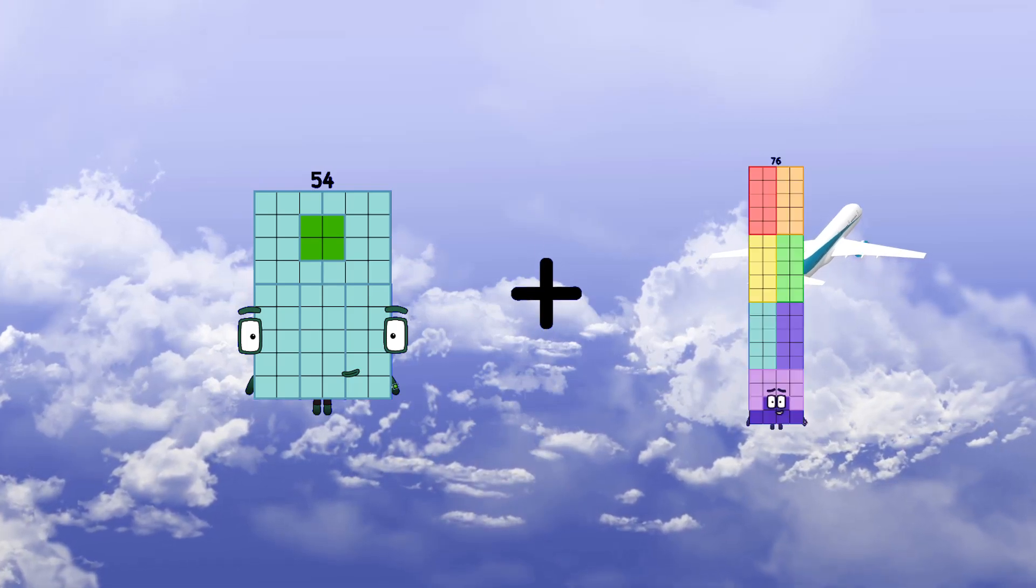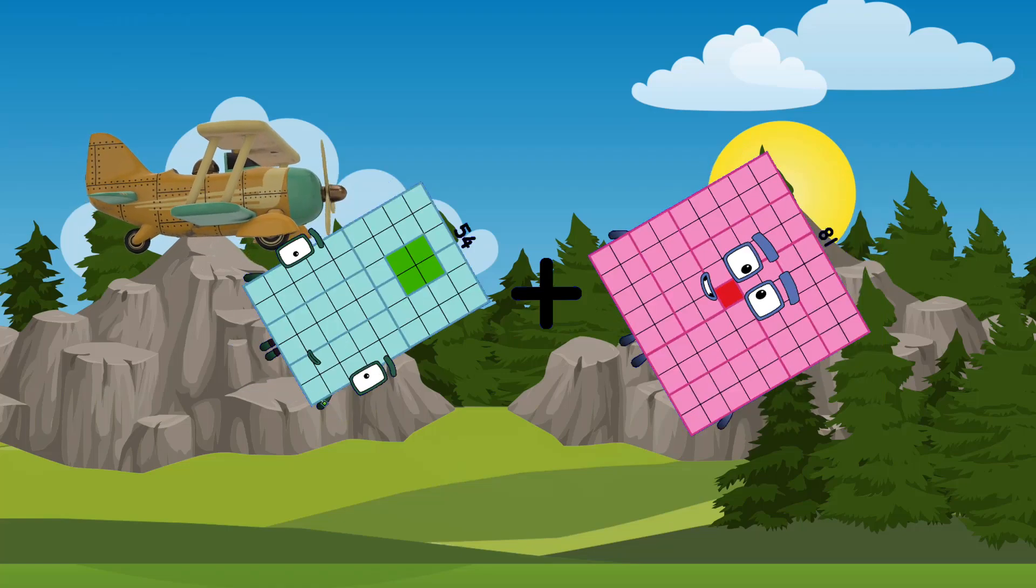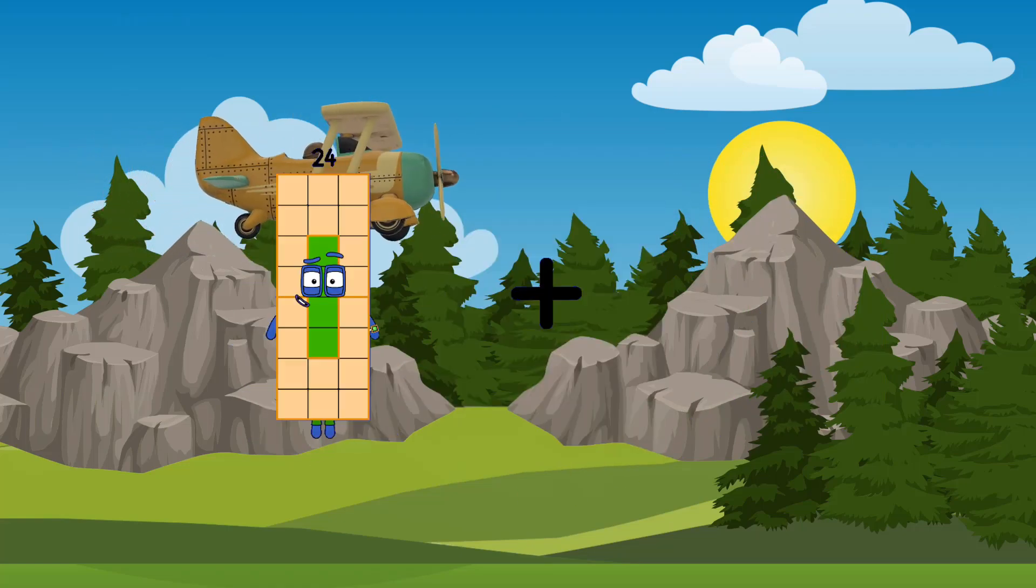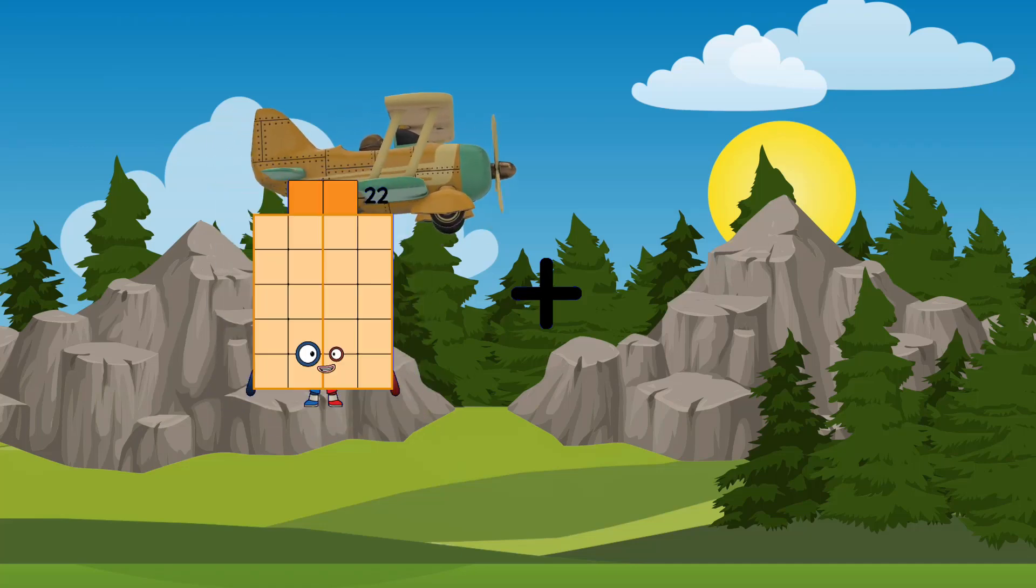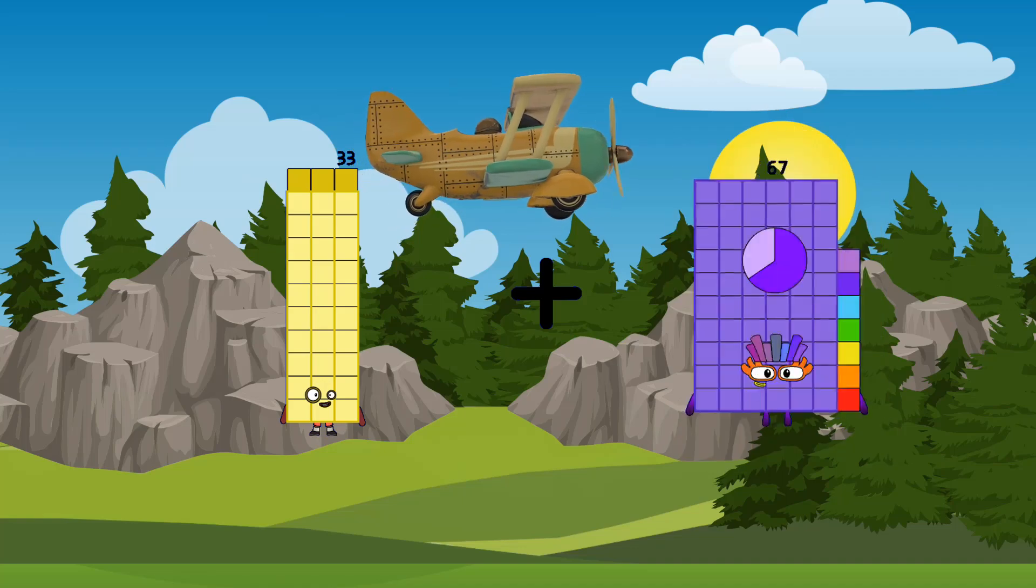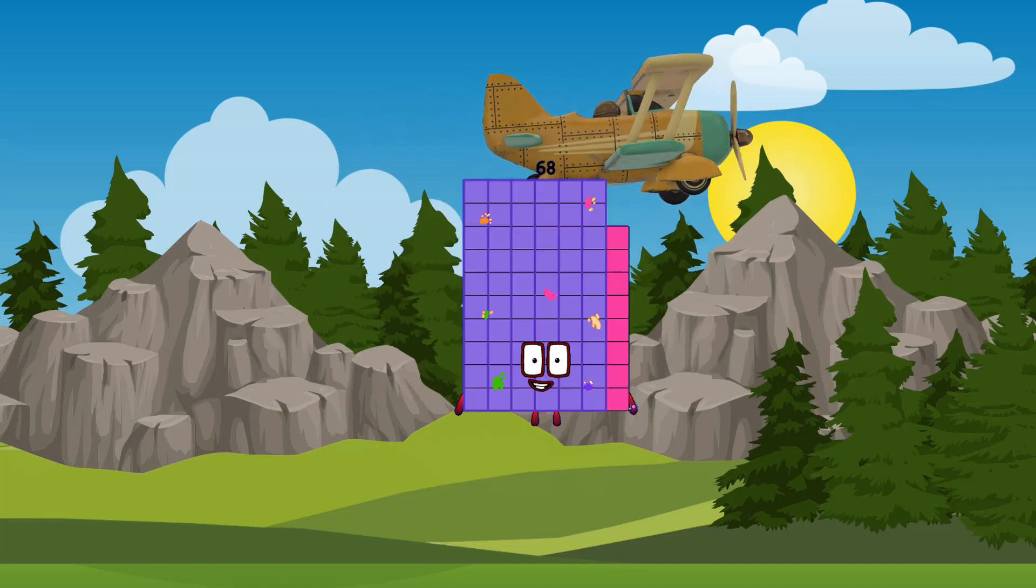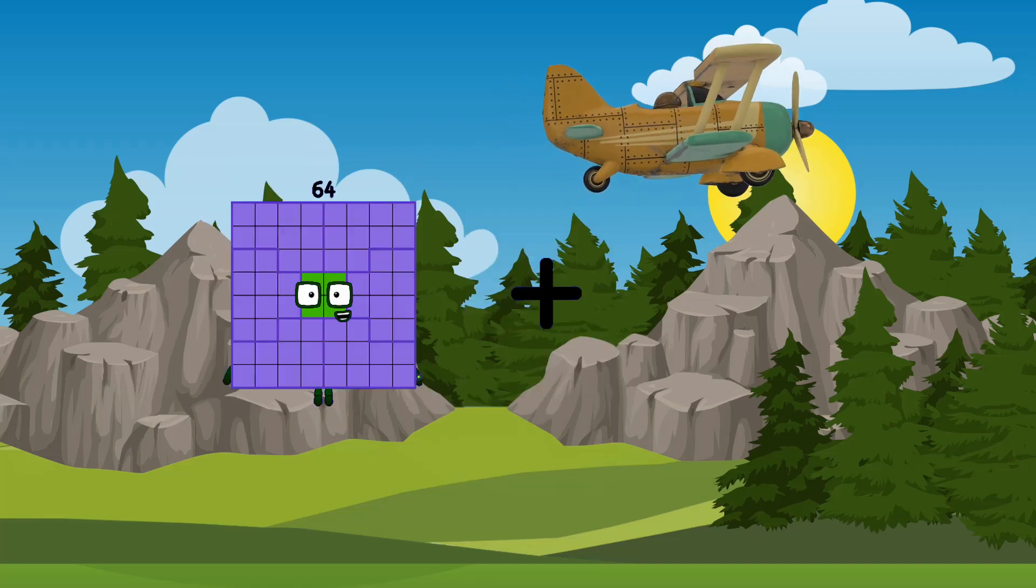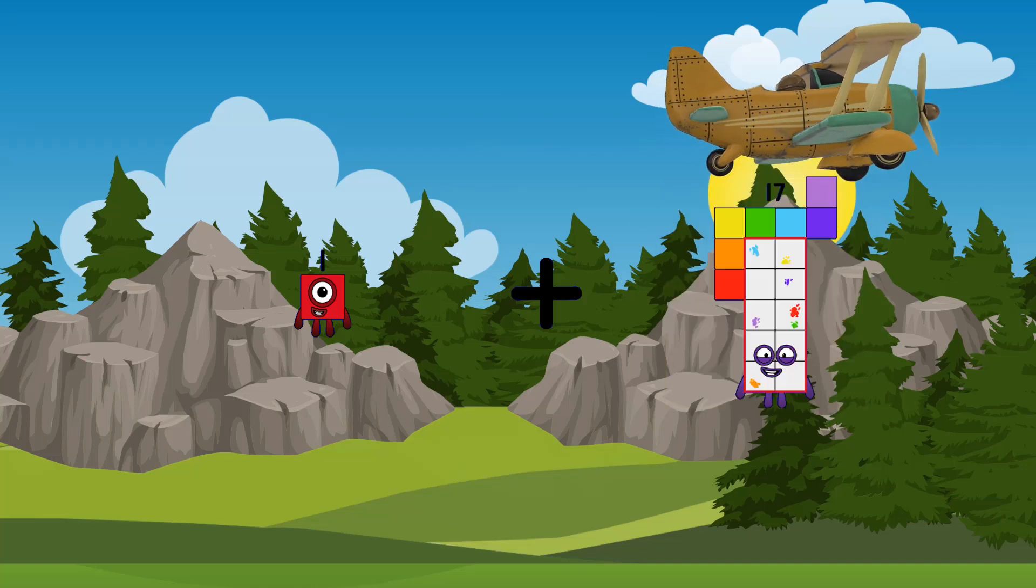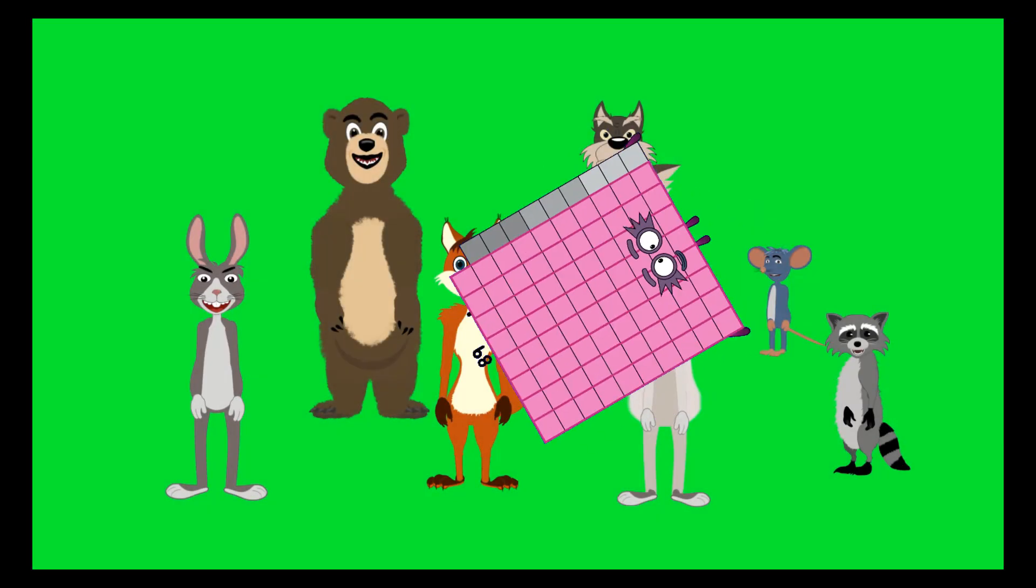54 plus 81 equals 135. 33 plus 35 equals 68. 1 plus 89 equals 90.